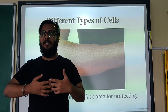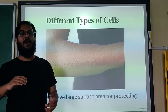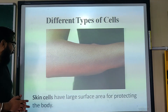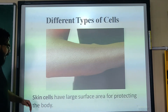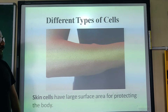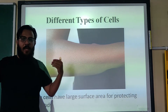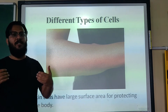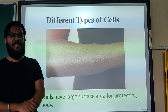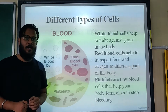The most important cells, or the largest collection of cells in the body, are the skin cells. Skin cells provide protection for the body. Skin cells have a large surface area for protecting the body. They cover the largest area in the animal body and protect us from heat, cold, dust, and many other things.